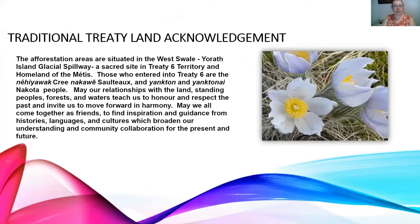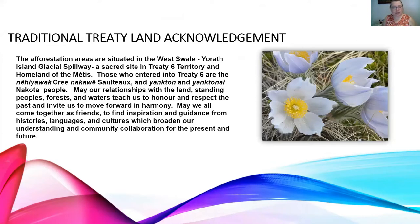We start with the traditional treaty land acknowledgement: the afforestation areas are situated in the West Swale, Yours Earth Island Glacial Spillway, a sacred site in Treaty Six Territory and homeland of the Métis. Those who entered into Treaty Six are the Nehiyawak Cree, Nakawē Soto, and Yankton and Yanktonai Nakota people. May our relationships with the land, standing peoples, forests, and waters teach us to honor and respect the past and invite us to move forward in harmony.